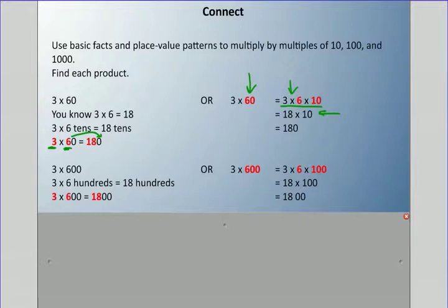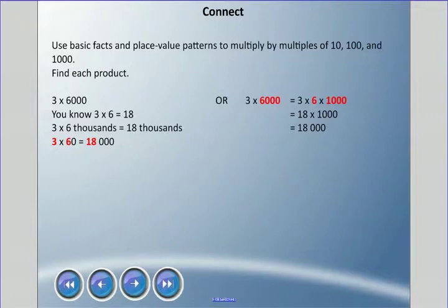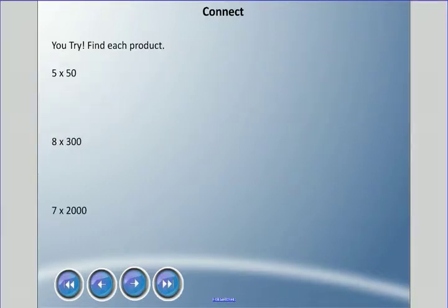For 3 times 600: we're multiplying the first two numbers and adding the number of zeros, which gives 1,800. Or break it up: 3 times 6 times 100 — 18 times 100 equals 1,800. For 3 times 1,000: we still use 3 times 6 is 18 and add the number of zeros. Breaking it up: 3 times 6 times 1,000 — 18 times 1,000 — equals 18,000.